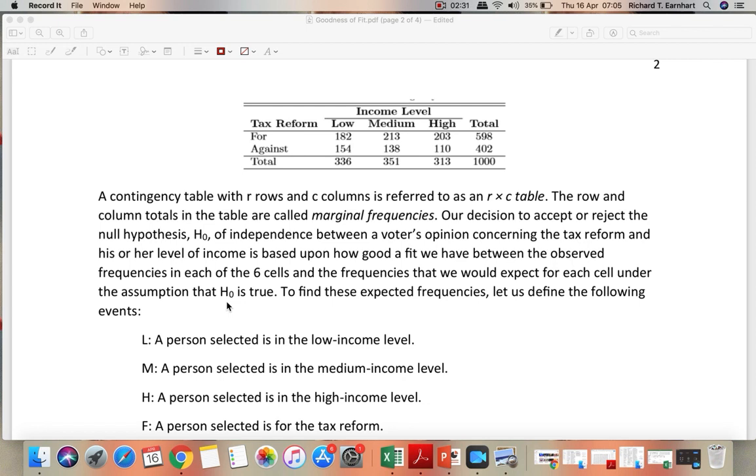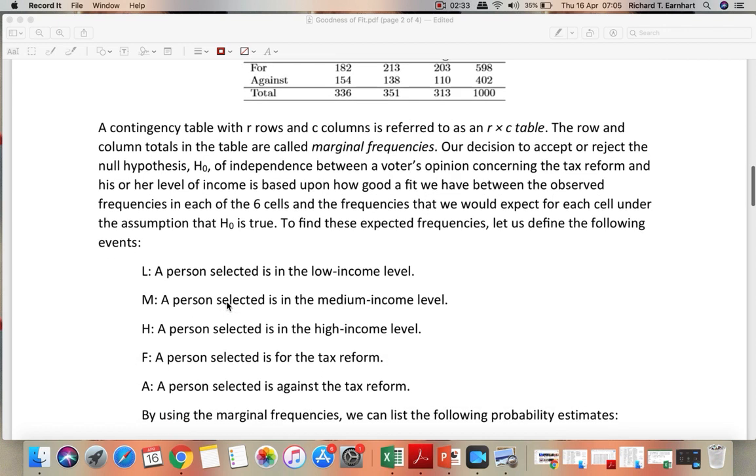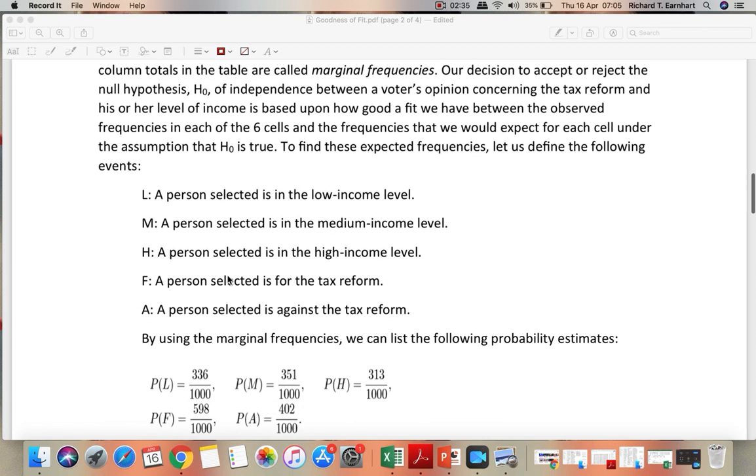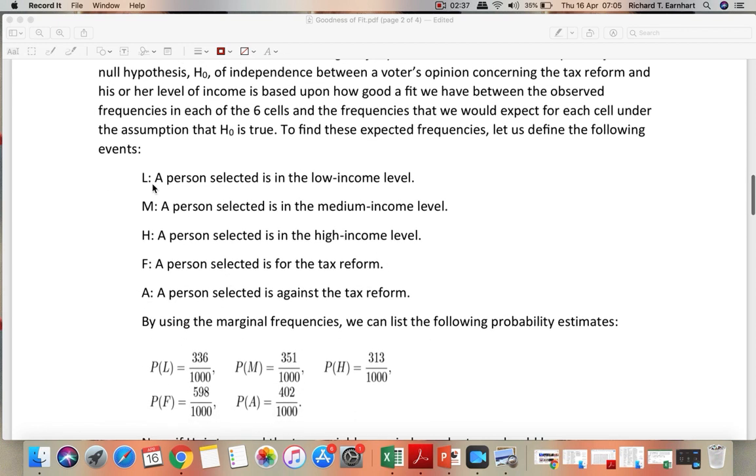To find the expected frequencies, we define the following events. L is the event that the person selected is in the low income level, M for medium, H for high, and then F means that the person is in favor of the tax reform, A against.